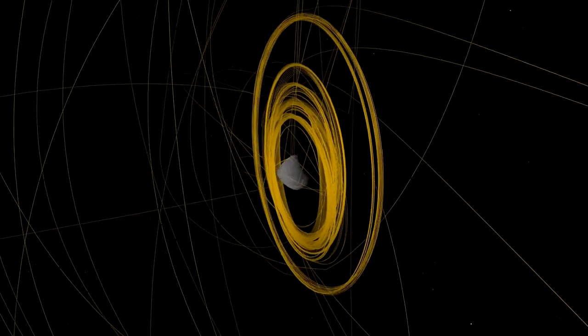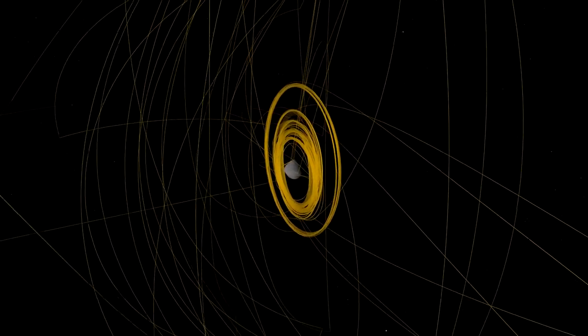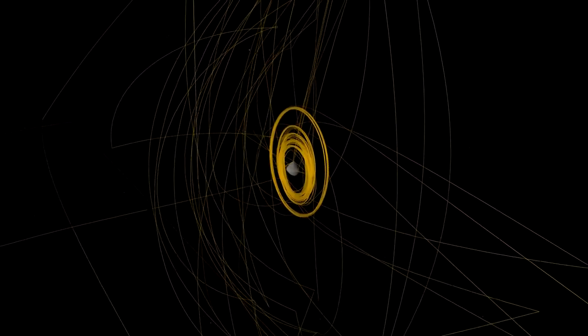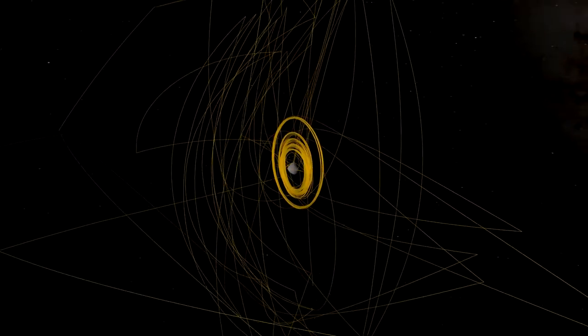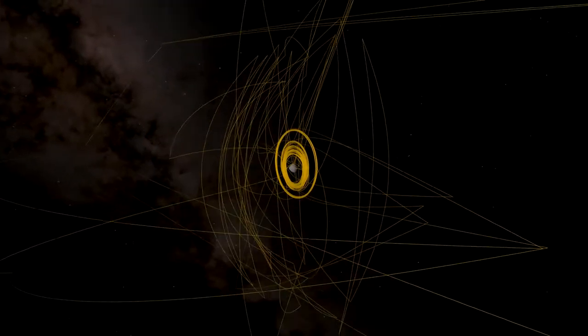Following TAG, the spacecraft drifted to a safe distance away from Bennu. By the end of October, mission controllers determined that it had exceeded its goal of collecting 60 grams of asteroid material. They directed it to stow the sample in preparation for return to Earth.